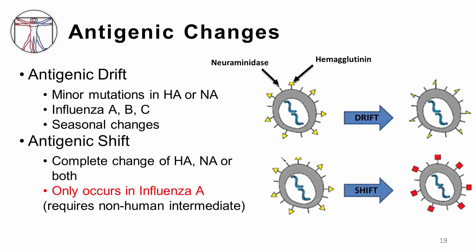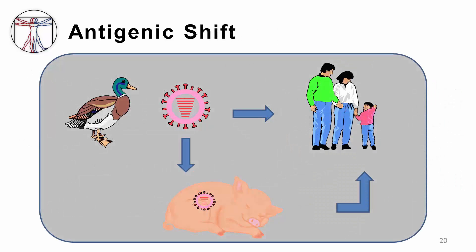Sometimes, a more drastic change of antigens occurs, from which totally different types of hemagglutinin and/or neuraminidase emerge. This phenomenon is called antigenic shift, and it only occurs with influenza A because that is the only group of influenza that infects both humans and animals. There are a few ways in which antigenic shift can occur. First, a strain of influenza that previously infected only animals might make a leap into humans. When the antigenicity of the virus is significantly different from what the human host has previously encountered, pre-existing immunity is not effective, and widespread disease can occur.